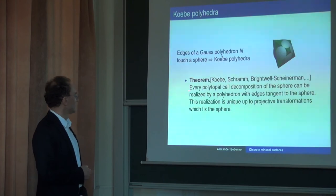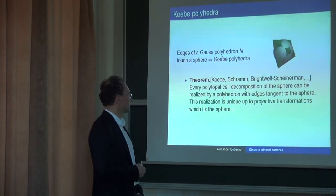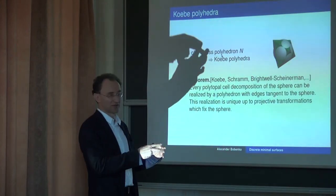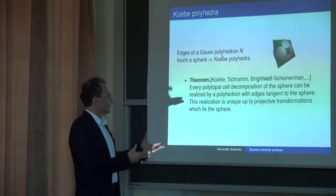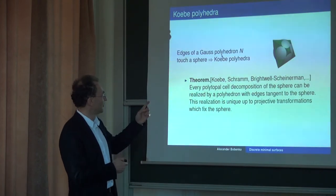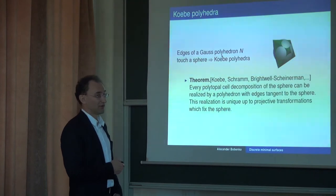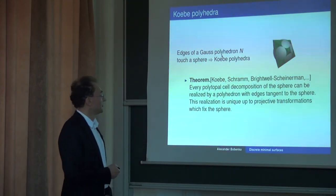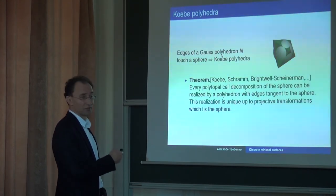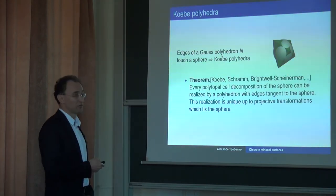The main theorem in this theory states that every polytopal cell decomposition of the sphere can be realized by a polyhedron with edges tangent to the sphere, and this realization is unique up to projective transformations fixing the sphere. You give a combinatorial sphere, and there is an essentially unique realization as a polyhedron with all edges tangent to the sphere. Combinatorics determines the geometry in this case — it is essentially unique up to Möbius transformations.